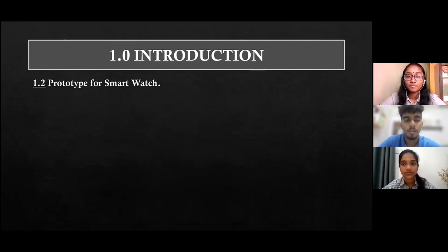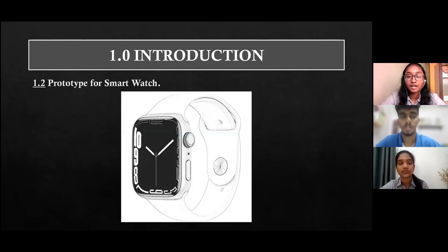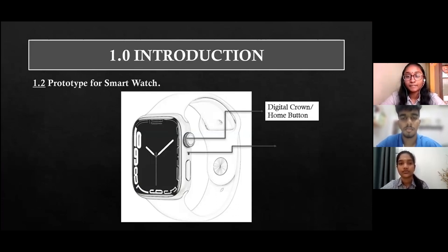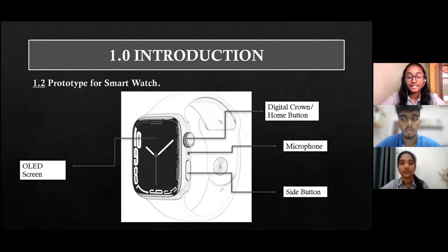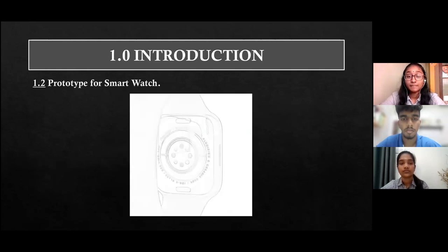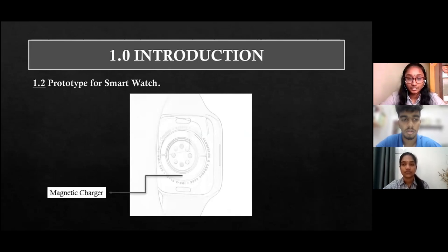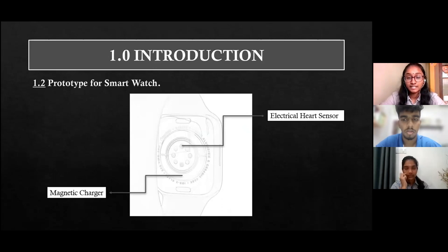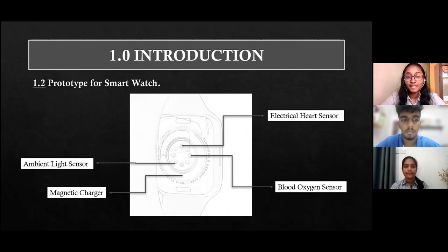Prototype for Smartwatch. This is the front view of our Smartwatch where we can find the digital crown or home button, microphone, side button, and also OLED screen. This is the back view of our Smartwatch where we can find the magnetic charger and the four type of sensors which are Electrical heart sensor, Blood Oxygen sensor, Ambient light sensor, and lastly 3rd generation optical heart sensor.